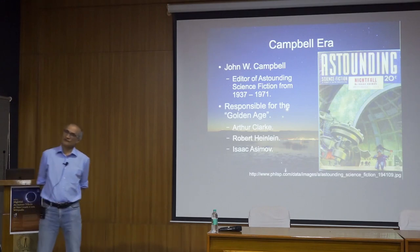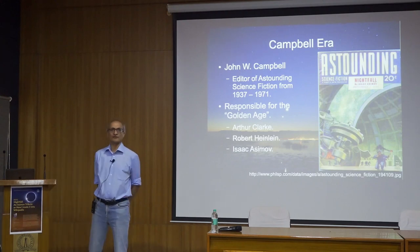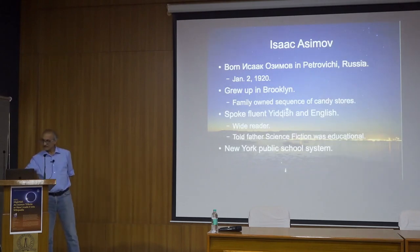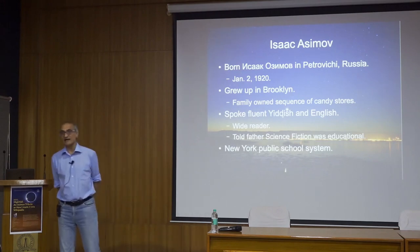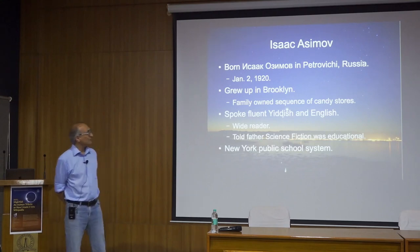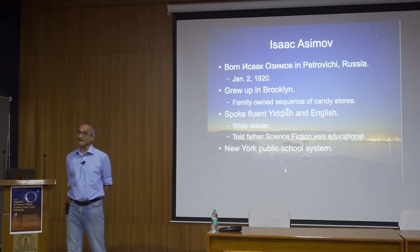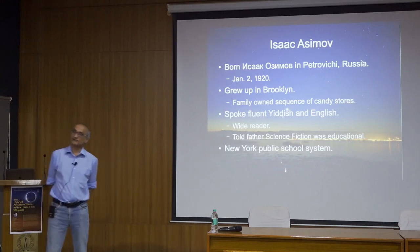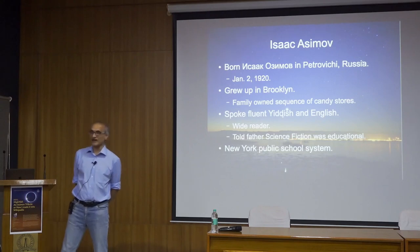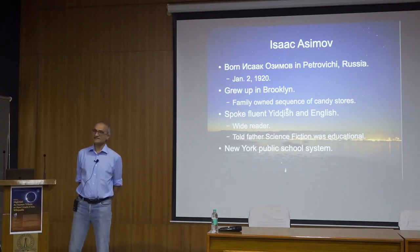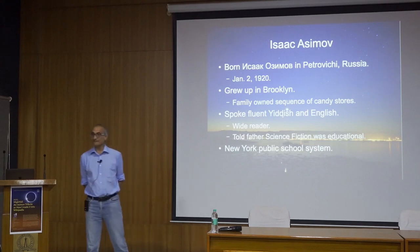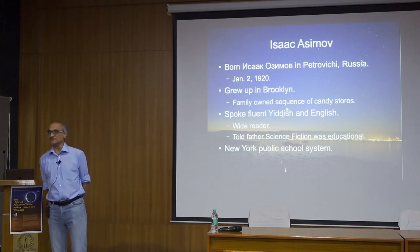The big names of the Golden Age were Arthur Clarke, Robert Heinlein, and Asimov. Silverberg would say he was part of the Golden Age, but probably not. Isaac Asimov was born in Russia on January 2, 1920 — though there's a little doubt about that, since it was just at the time of the revolution and they had changed calendars recently. He grew up in Brooklyn, and his family owned a series of candy stores.